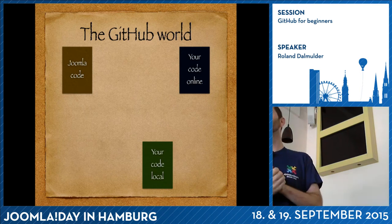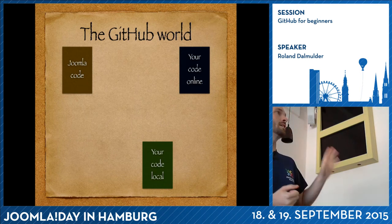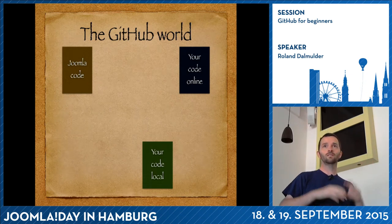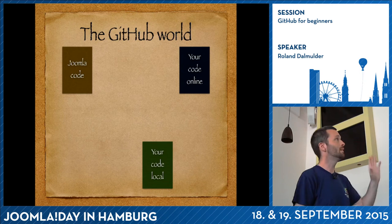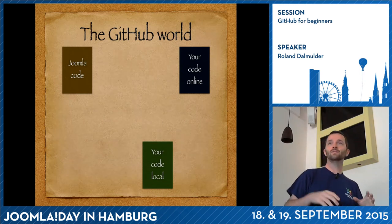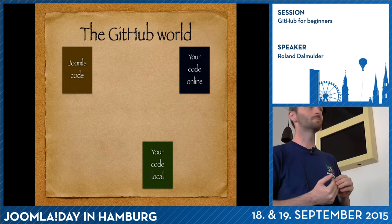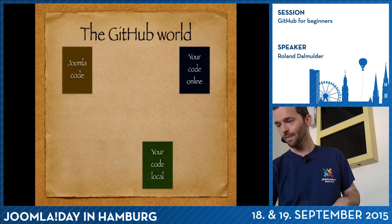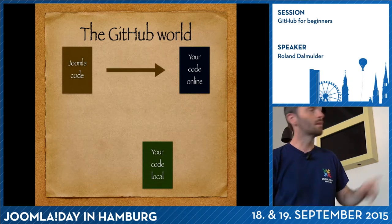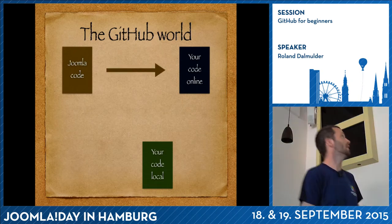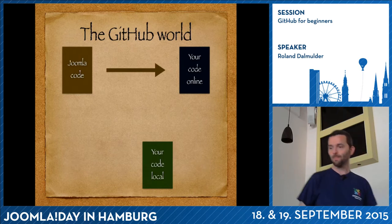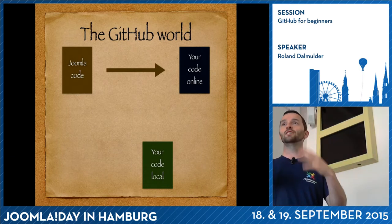The GitHub world — the way we work with Joomla — involves three locations: the Joomla code online on GitHub, your code online which is a copy of the Joomla code, and your code local on your computer. To get your code online it has to be a copy of the Joomla code, because then you have the option to change the code.